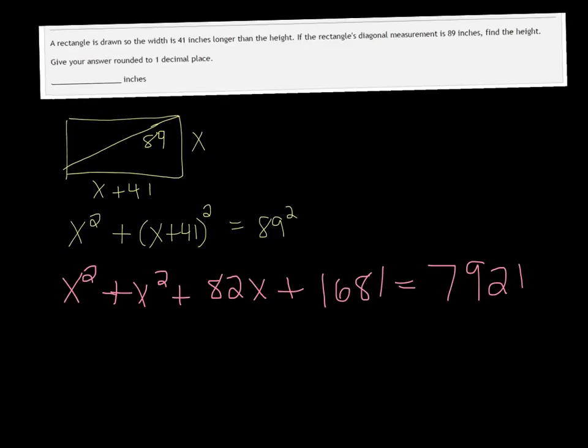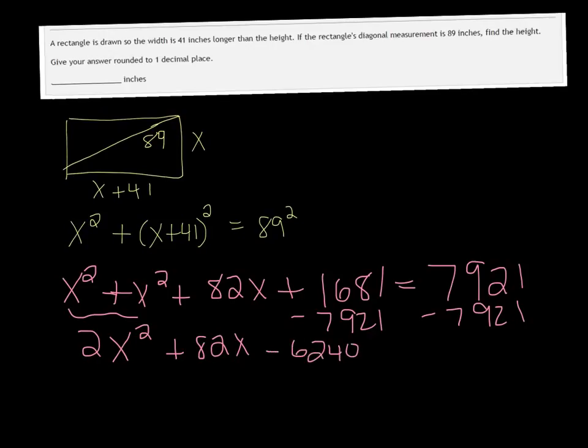And then we want this, we have a quadratic equation on our hands, so we want to make sure that we combine our like terms and get one side equal to zero. So, if I subtract this 7921 on both sides, and you can see I've combined the two x squared terms, so we have 1681 minus the 7921 is negative 6240. Since each term is even, we can divide everybody by two and make it a little easier to work with.